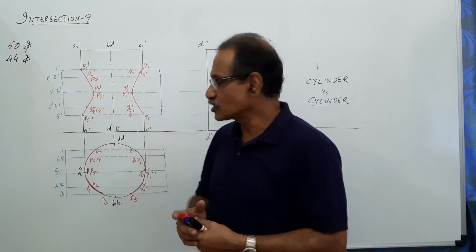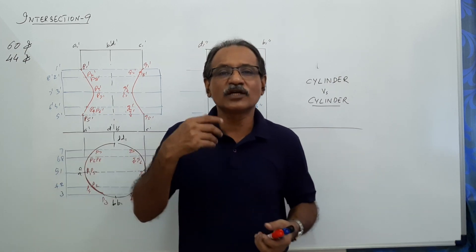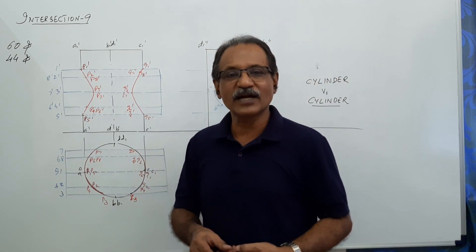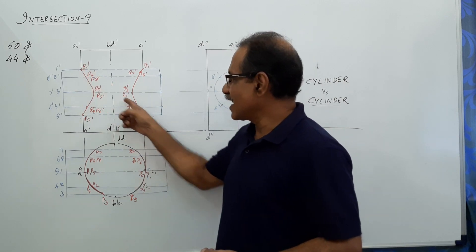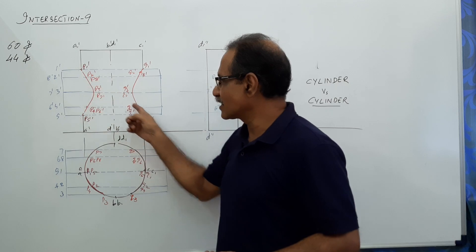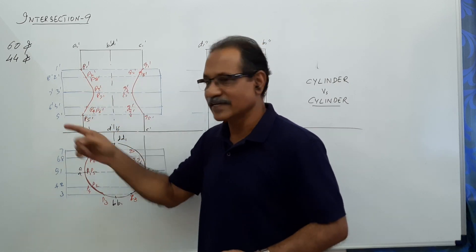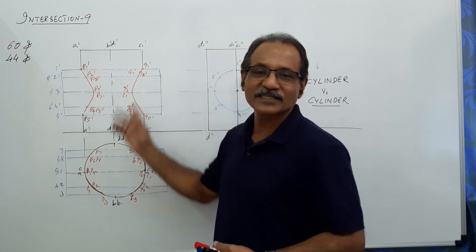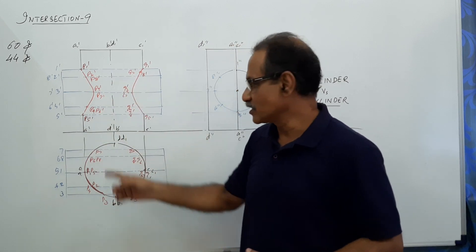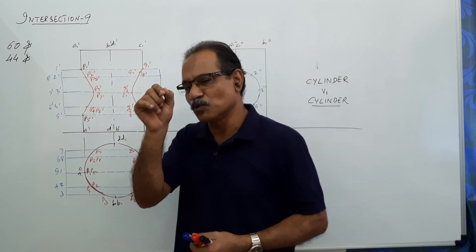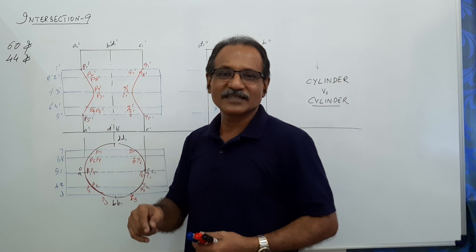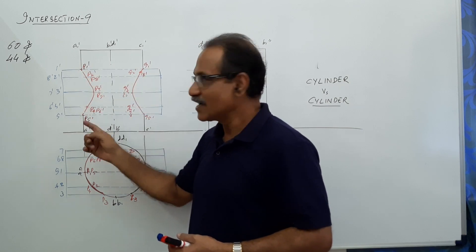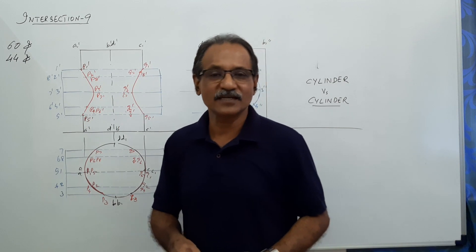Now suppose the horizontal cylinder diameter is equal to the vertical cylinder diameter — what will happen? The intersection curve becomes a straight line in an X shape. You simply connect the points by a line in each direction. You can mark the points directly in the elevation without marking them in the plan first. If you mark them in the plan and project, you may get small errors and get a curve-like shape. To avoid that, name the points directly in the elevation and then mark them in the plan to complete the drawing.